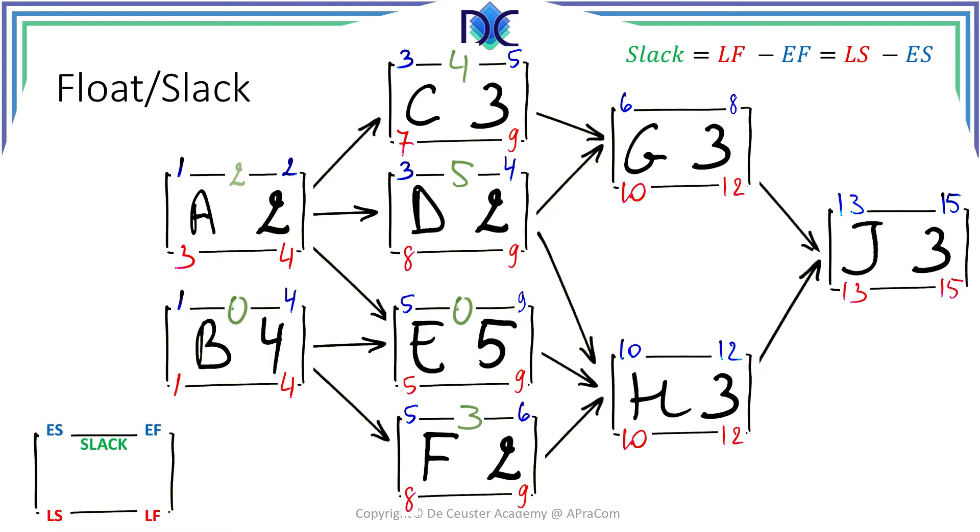Activity G gives us a slack of 4. Activity H a slack of 0. And finally activity J also has a slack equal to 0. So now we can go to the next slide and identify the critical path.